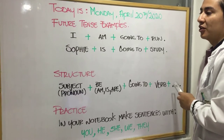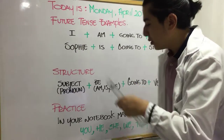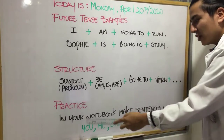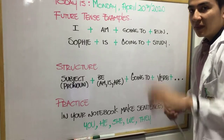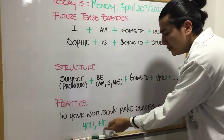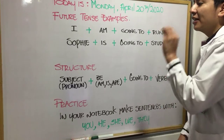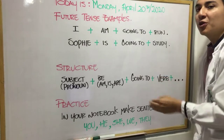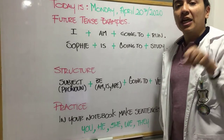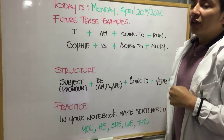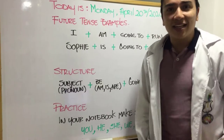Now it's time for you to practice at home. In your notebook, you're going to write sentences using the following pronouns: you, he, she, we, and they. Use the same structure we covered, but with different verbs. You're going to use the verbs from your spinning wheel in the infinitive form. That's it for today guys — easy, right?